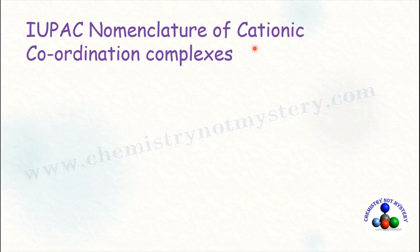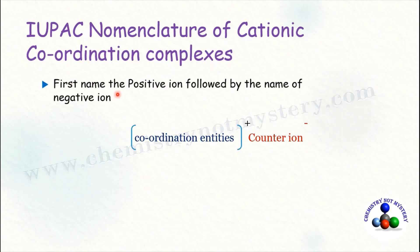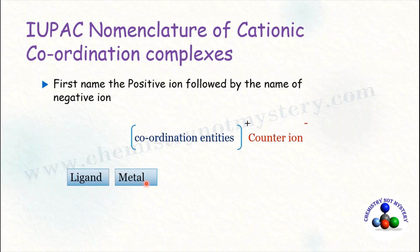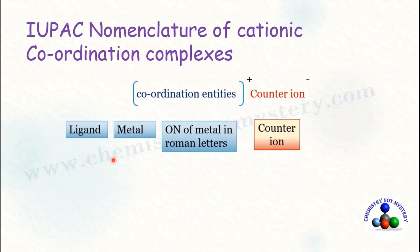Now come to the IUPAC nomenclature of cationic coordination complexes. If the coordination complex is positively charged, the counter ion is present after the coordination sphere. As per the rule, the name of the positive ion is followed by the name of the negative ion. So first we name the coordination entity: write the name of the ligand, then the name of the metal, followed by the oxidation number in Roman numerals in round brackets, then the name of the counter ion.